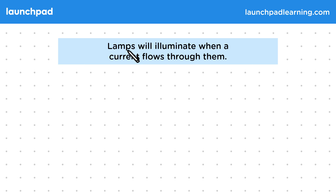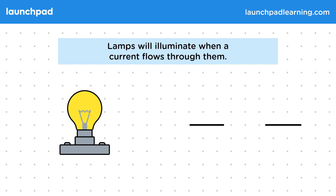Lamps will illuminate when a current flows through them, though we sometimes refer to these as bulbs. These work as the current heats up the filament in them, causing this filament to emit light. You should get very familiar with the circuit symbol for lamps — this circle with a cross inside — as these are very common in exam questions.